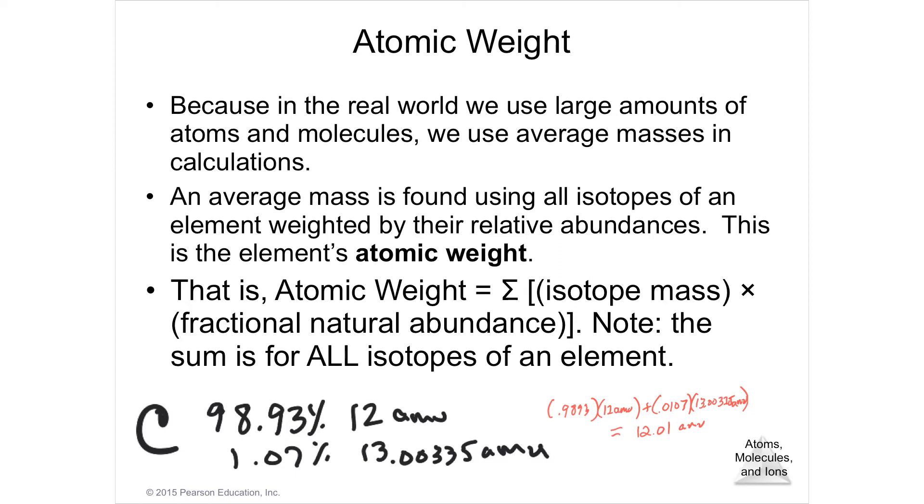So if you want to get the number that's on the periodic table, you are going to take the percentages as decimals. So I've written it over to the side: 0.9893 times 12, then plus 0.0107 times 13.00335 equals, and then add them together.